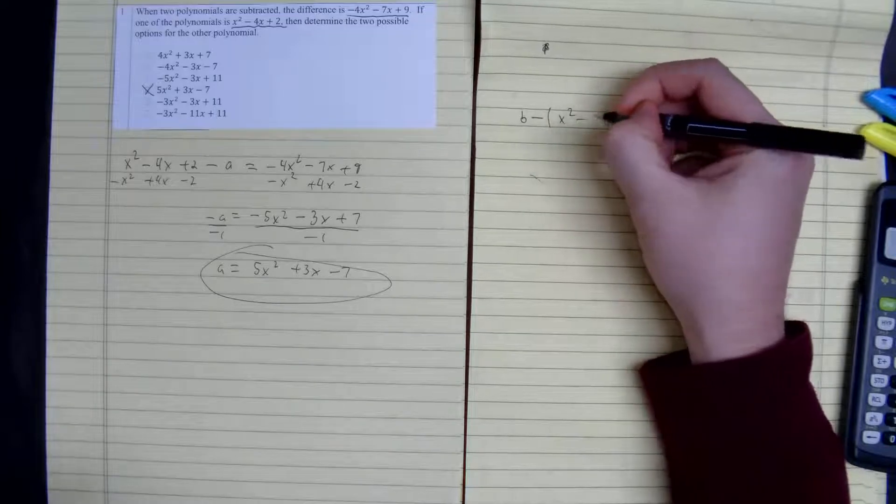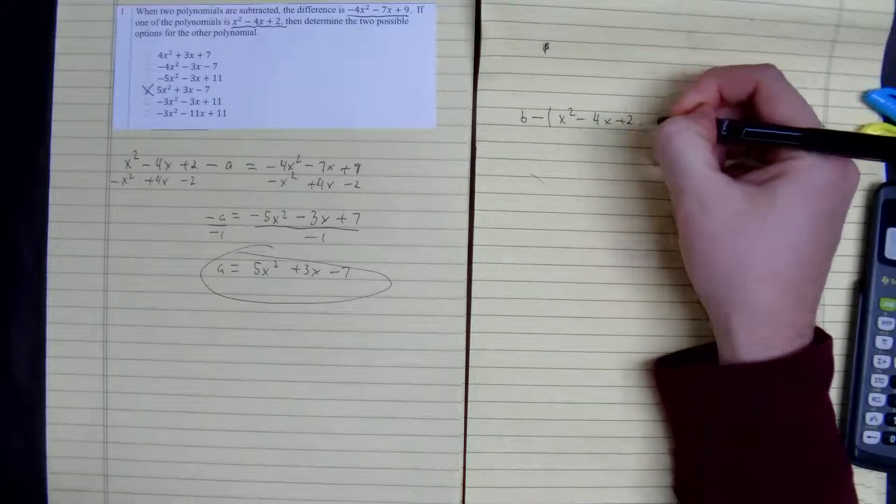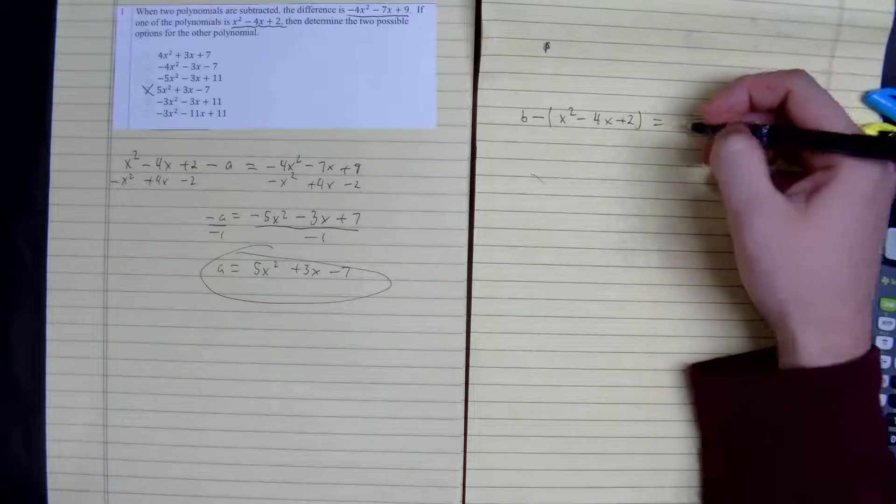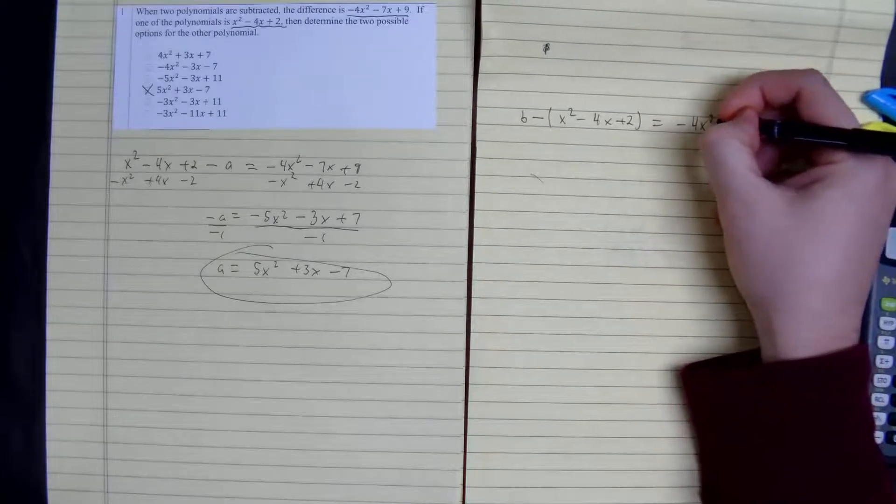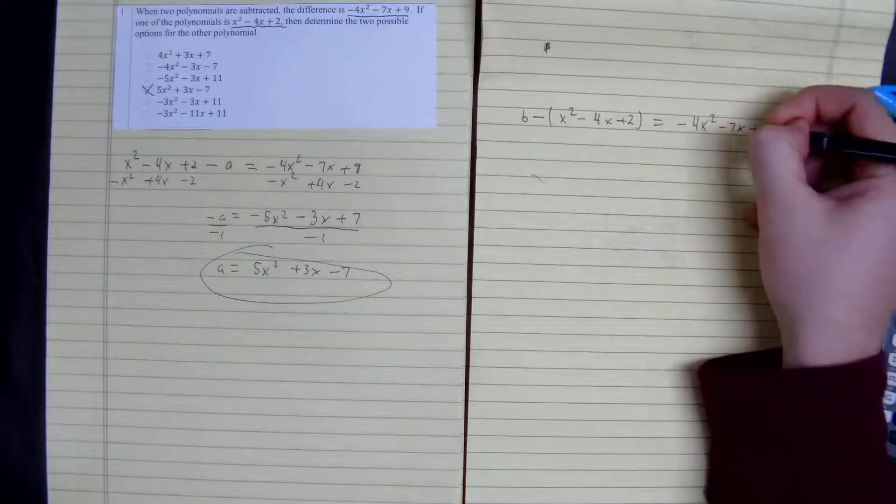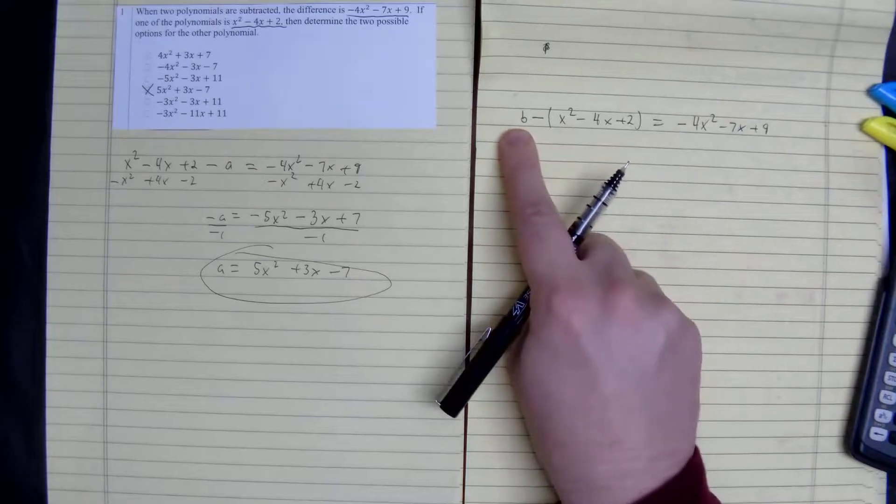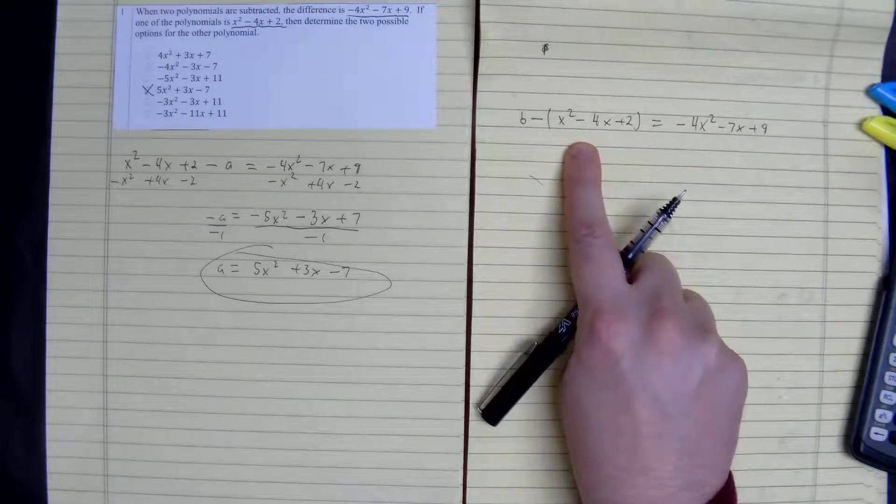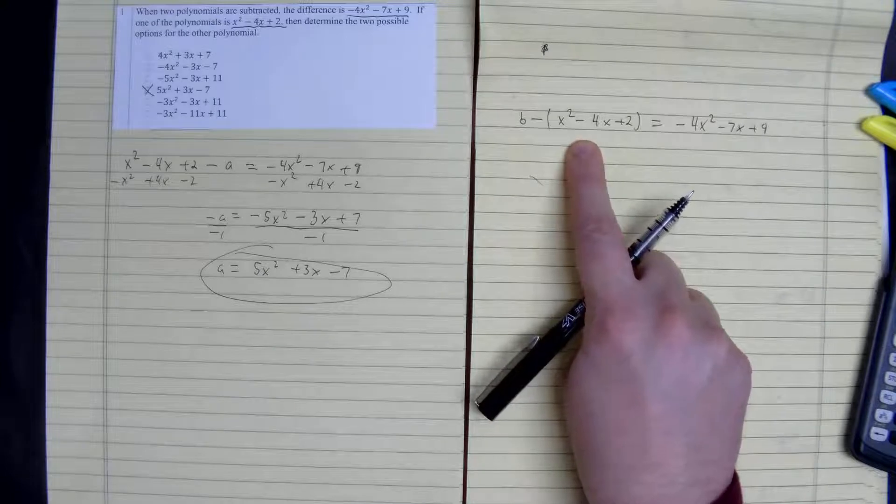x squared minus 4x plus 2 equals negative 4x squared minus 7x plus 9. So here we're trying to find equation B. We're taking away the equation given this time, doing the flip.